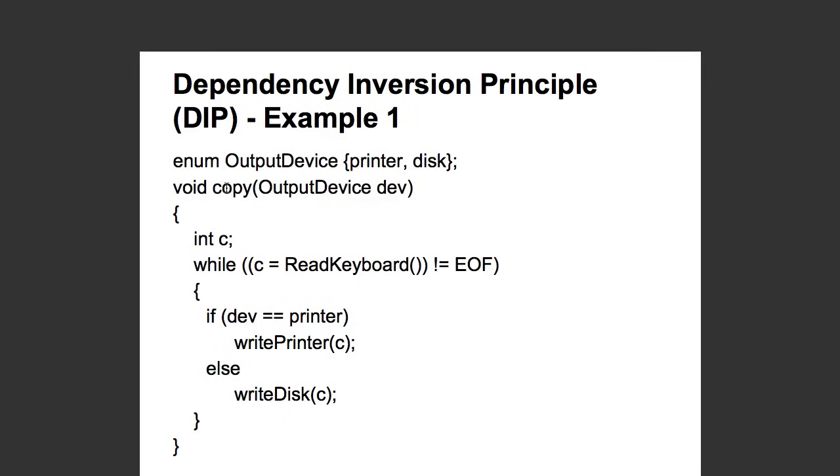Look at this implementation of the copy method. What it's doing is based on the output device which is passed in, which could be printer or a disk, whatever is read from the keyboard, it would be written down to the output device. So you can see the logic for it in here. You read it from the keyboard and you are checking if the output device is printer, then write to printer, else write to disk. Now what is the problem with this?